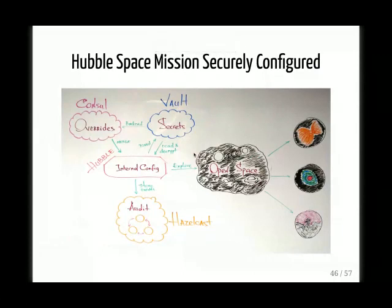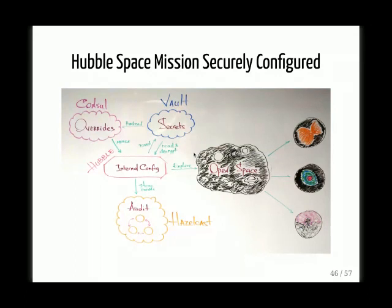So first of all, let's see what we're going to look at. We're going to look at the Hubble telescope, which is in the middle where it says 'internal config.' We're looking at this only from the configuration perspective. We're going to have a Hubble internal config which is not environment-specific and doesn't have any secrets inside. Then we have our overrides that will live in Consul. We'll have Vault, which is our secret store, running separately from Consul. However, we've chosen to use Consul as Vault's backend — sort of like a data store.